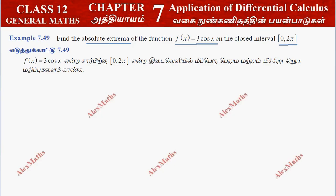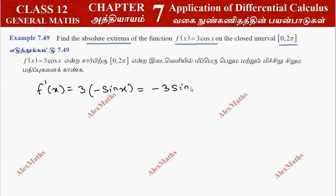For the procedure, we find f'(x). So f'(x) is equal to 3 times the differentiation of cos(x), which is minus sin(x). So it is minus 3sin(x).